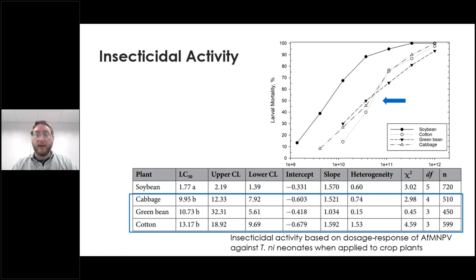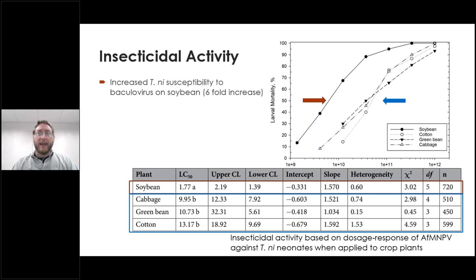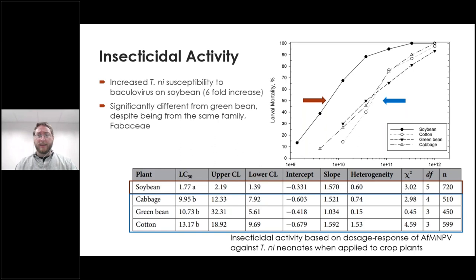We repeated these experiments a minimum of three times. For our control studies with the baculovirus alone, we found a very interesting response. On the y-axis is larval mortality and on the x-axis is the dosage response — the virus application rate on a log scale. Cabbage, green bean, and cotton all had very similar viral potency on the leaf; all the LC50 rates were statistically equivalent. However, on soybean, we had a very interesting result: a six-fold increase in susceptibility of the cabbage loopers.